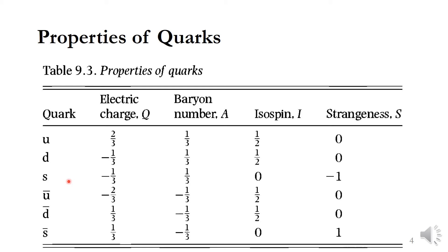These are the proposed quarks: U, D, S, and then anti-quarks U-bar, D-bar, and S-bar. Where U represents up, D represents down, and S represents strange, and then their anti-quarks. See their properties. U has an electric charge of +2/3 of the electronic charge, D has -1/3, and S again -1/3.